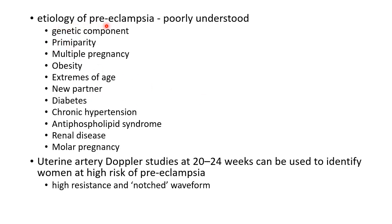The etiology of preeclampsia is poorly understood. Risk factors include a genetic component and strong family history, primiparity, multiple pregnancy, obesity, extremes of age, new partner, diabetes, chronic hypertension, antiphospholipid syndrome, renal disease, and molar pregnancy.